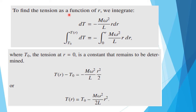Now we find the tension as a function of r. We integrate the equation by the variable separable method, separating the variables. Integrating from T₀ to T(r) of dT equals minus the integral from 0 to r of m·omega squared by l times r dr. After integration, we get T(r) minus T₀ equals minus m·omega squared by l times r squared by 2, so T(r) equals T₀ minus m·omega squared by 2l times r squared.